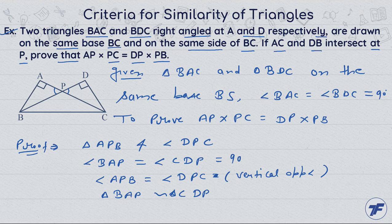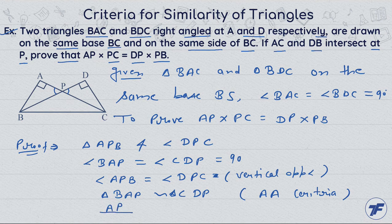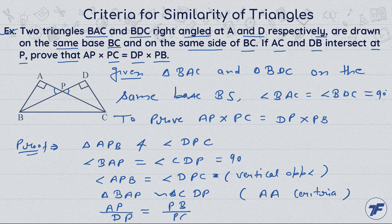By which criteria? By the Angle-Angle (AA) criteria, the triangles are similar. It means we can say that AP upon DP equals PB upon PC. So from this, cross multiplying, AP into PC equals DP into PB.